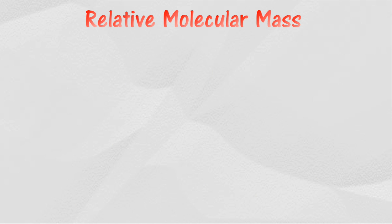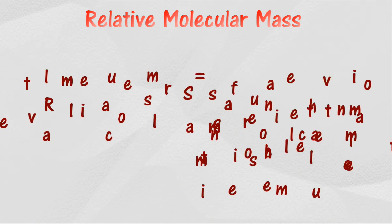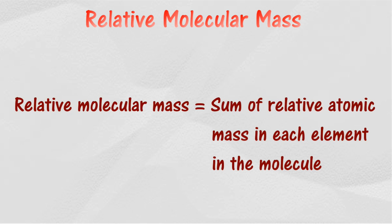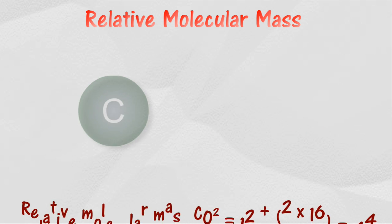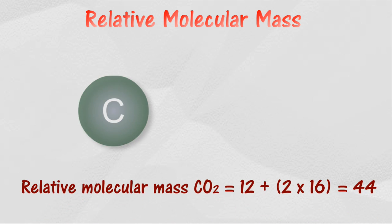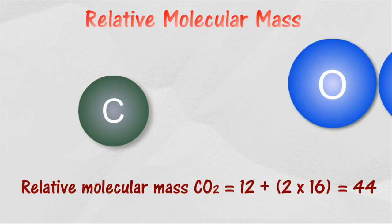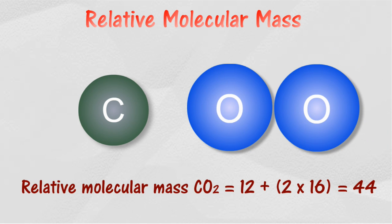The relative molecular mass for a molecule can be calculated using the molecular formula of the substance and the relative atomic mass of each element in the molecule. In the case of carbon dioxide, the relative molecular mass can be calculated by adding up all the masses of relative atomic mass in the carbon dioxide molecule, thus the relative molecular mass of carbon dioxide is 44.